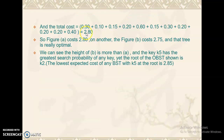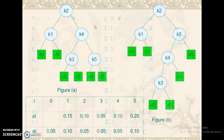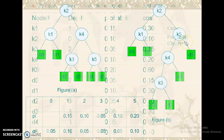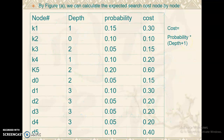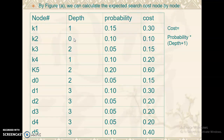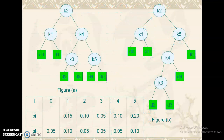The cost of the first BST comes out to 2.80. Similarly, we create the same table for the second BST — the depth values vary, probabilities remain the same, and cost changes because depth is modified. The second BST has a cost of 2.75, which is better than the first BST. So the first appearance does not tell us which is the proper BST, but the calculated cost tells us which is better.